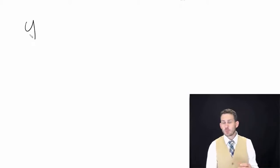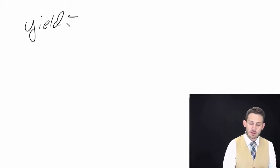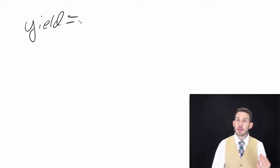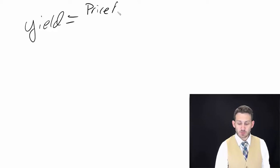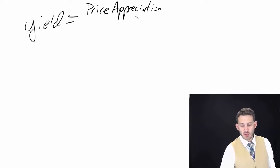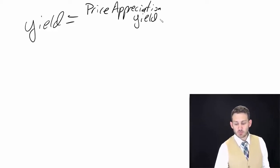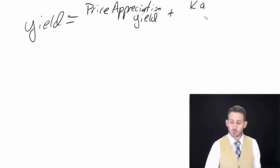The way we compute this is we set yield as being equal to a couple of different things. We're going to separate this into two components: one is a price appreciation yield, and then we also have a capital gains yield.